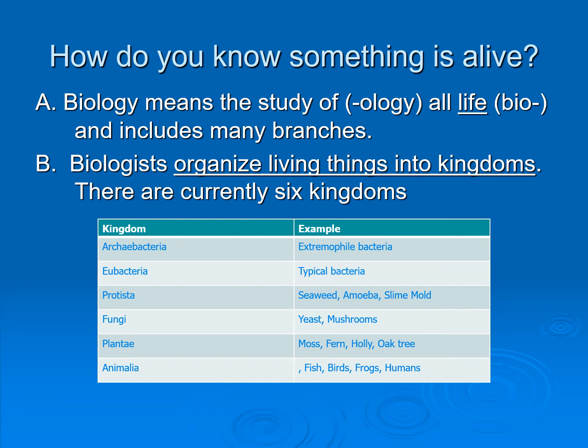Then we have the Plantae kingdom, which is your mosses, ferns, hollies, oak trees, shrubs, and flowers — all those things fall in kingdom Plantae. And then kingdom Animalia, which are your fish, birds, frogs, and humans — all those things you've learned about so far in your science education.